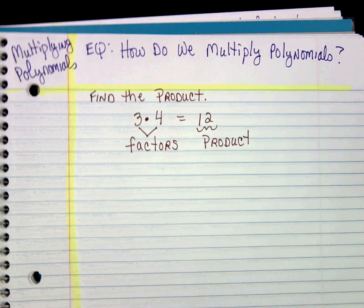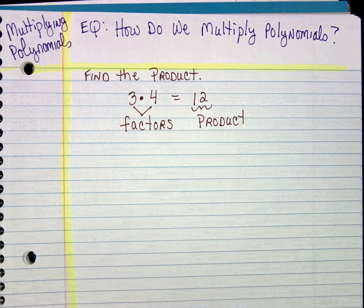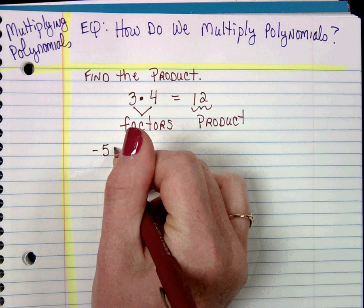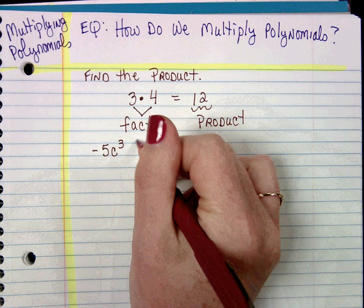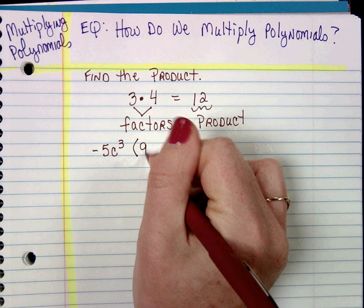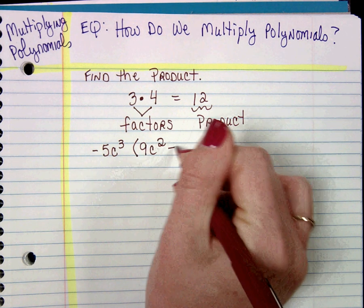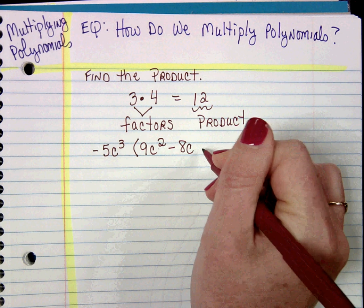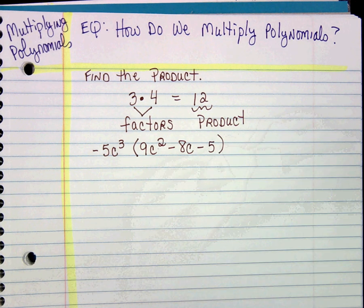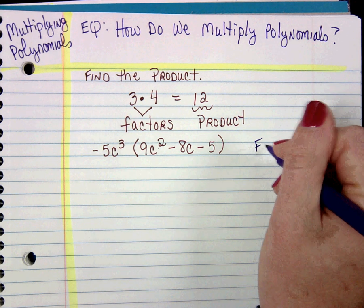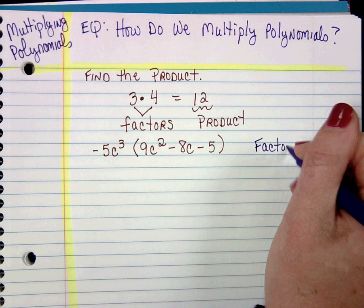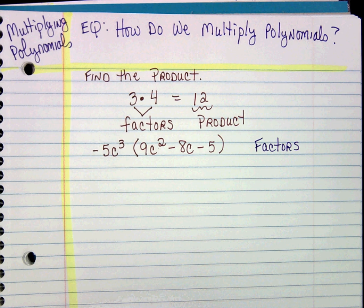Here's an example of a monomial, negative 5c to the third, times a trinomial, 9c squared minus 8c minus 5. I'm asking you to find the product. I've given you the factors. These are the factors.